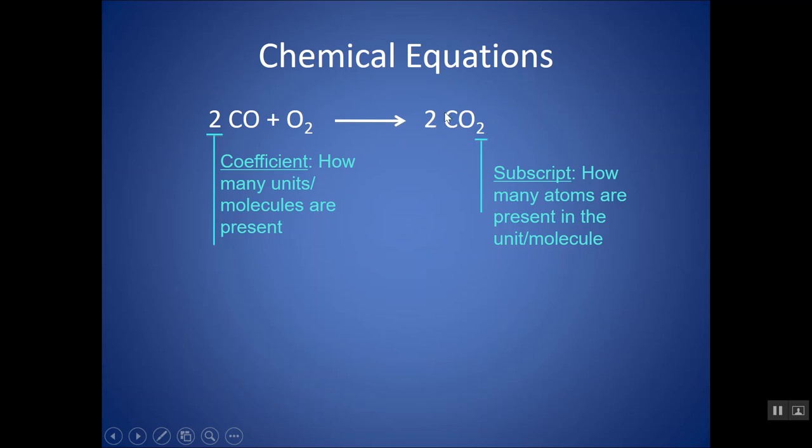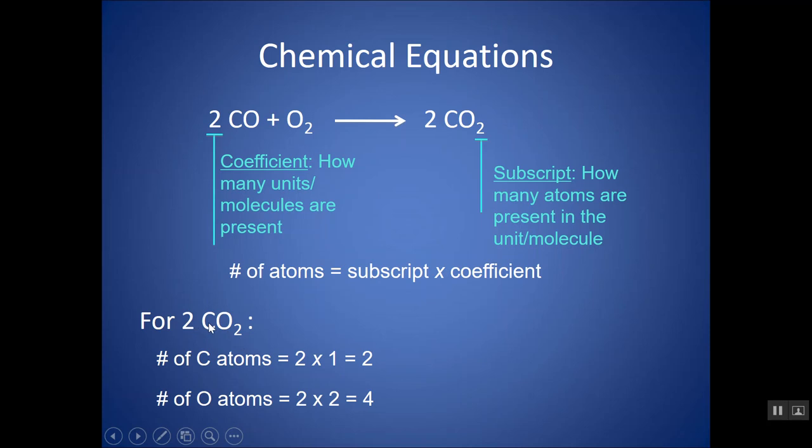This is telling me there's two molecules of CO2, and in those molecules of CO2, there are two oxygens. To get the total number of atoms represented by that, you would multiply the subscript times the coefficient. So if I see two CO2, I would have two atoms of carbon and four atoms of oxygen.